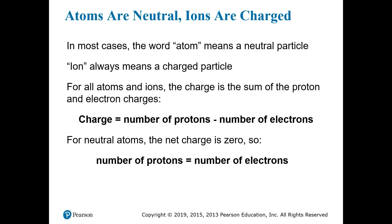In a neutral atom of hydrogen, you have one proton and one electron. One proton minus one electron gives you zero, so the charge on a neutral atom is zero. If you were to get rid of that electron, you would have one proton and be subtracting zero, so the charge would be plus one. When you get rid of electrons, you're left with a positive charge. For neutral atoms, the net charge is always zero, which means the number of protons is exactly equal to the number of electrons.